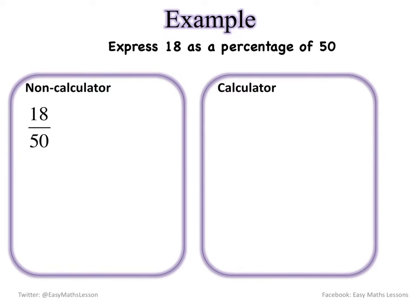Now if I look at the very first example it says express 18 as a percentage of 50. In simple terms that means if you've done a test and you've got 18 marks out of a total of 50, then it's 18 correct out of 50 and what that is is a percentage. So I'm going to show you two methods: first the non-calculator method and then the calculator method.